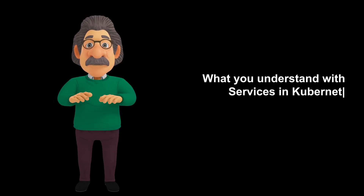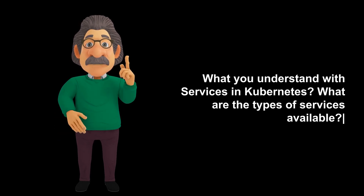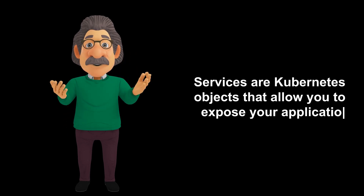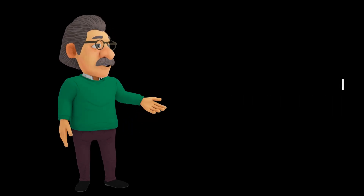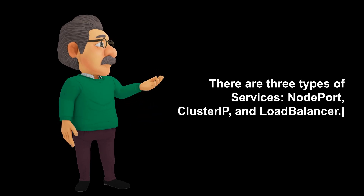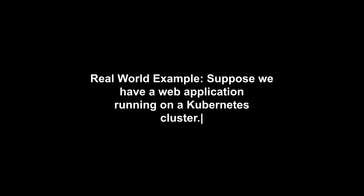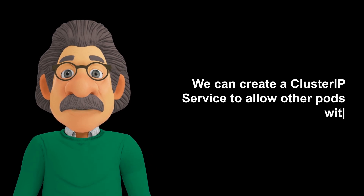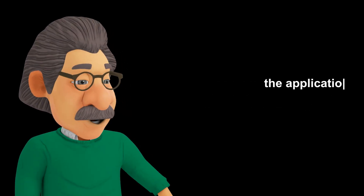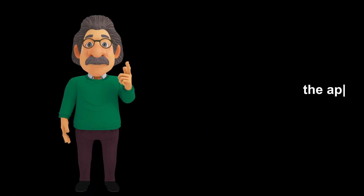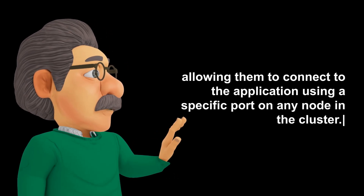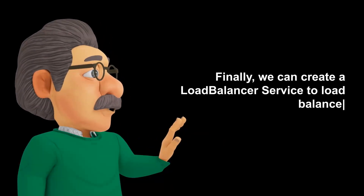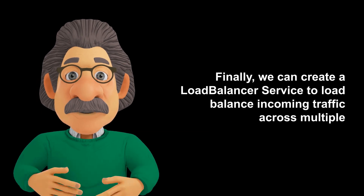What are services in Kubernetes and what types are available? Services are Kubernetes objects that allow you to expose your application to the network and access it from other pods or external clients. There are three types of services: node port, cluster IP, and load balancer. For example, we can create a cluster IP service to allow other pods within the cluster to access the application, a node port service to expose the application to external clients on a specific port, and a load balancer service to distribute incoming traffic across multiple nodes.